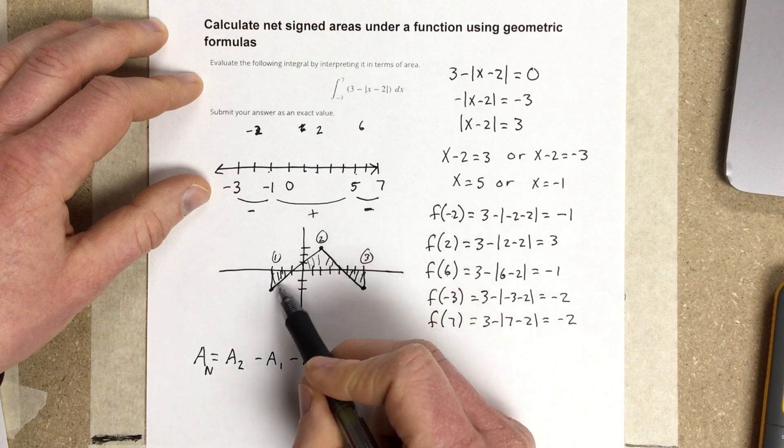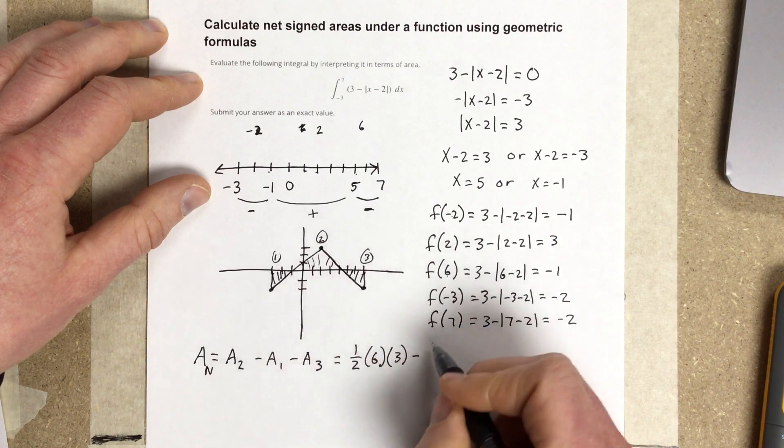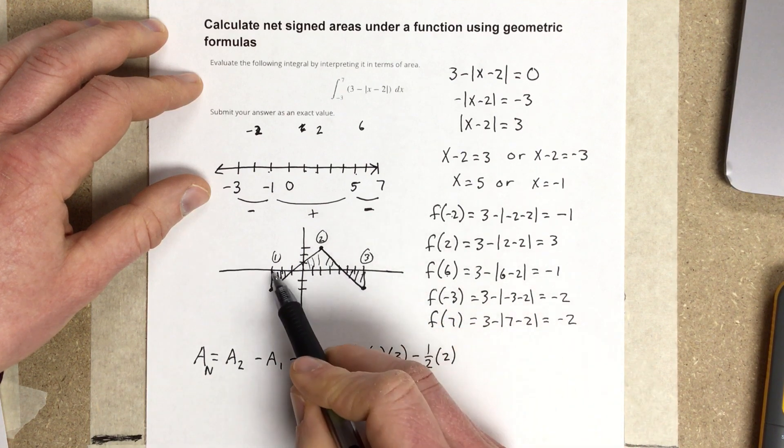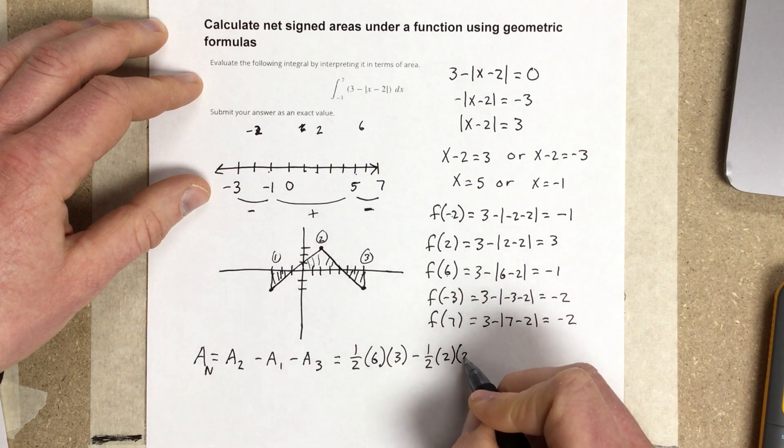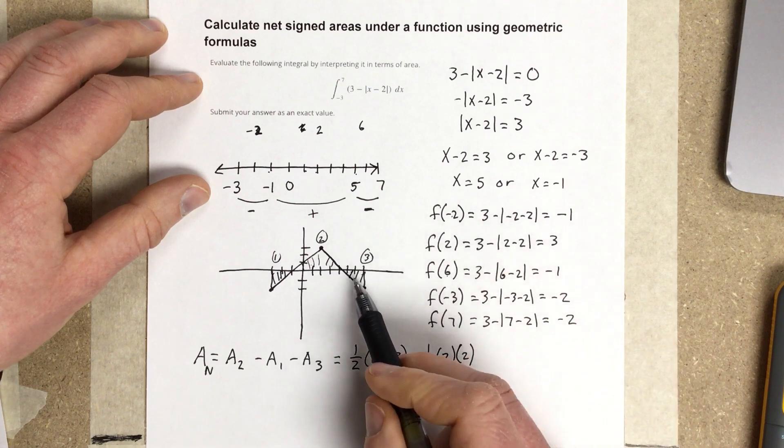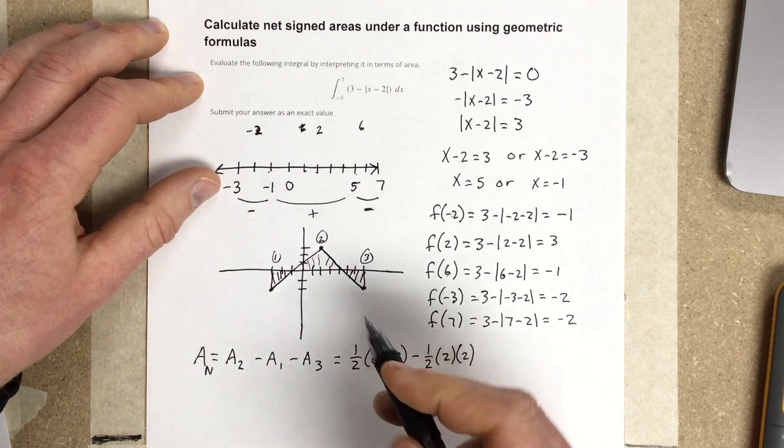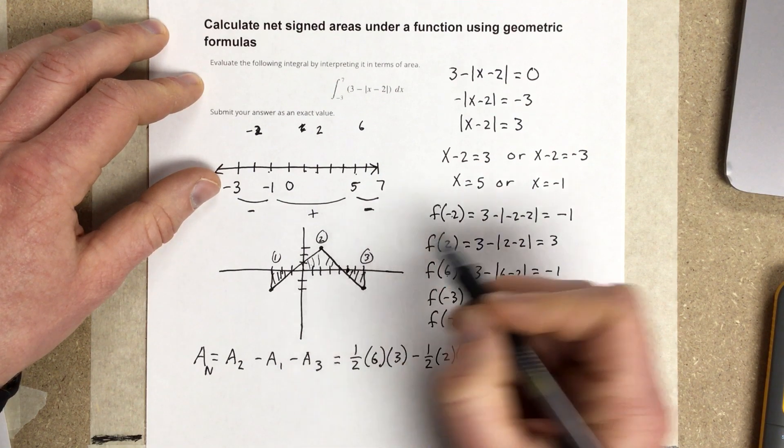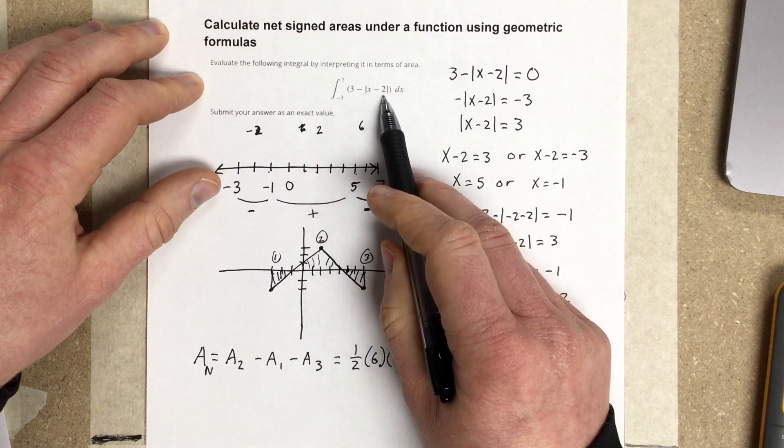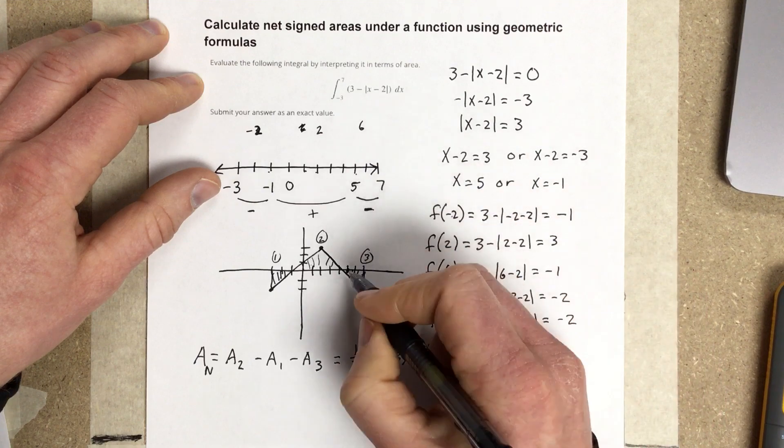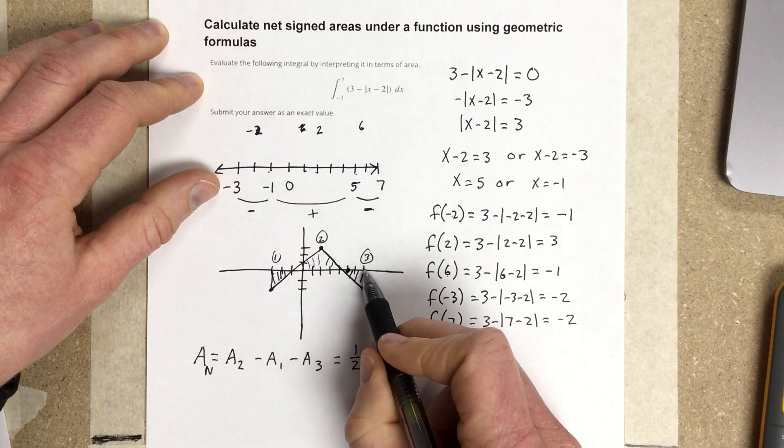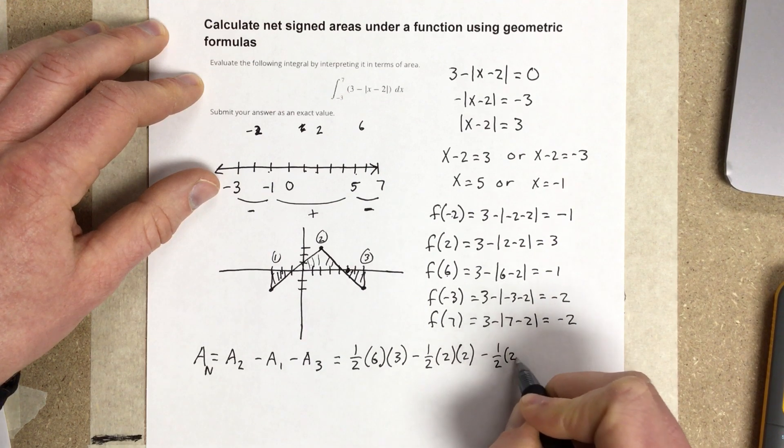And then I'm going to subtract out, the base for this piece is 2. So, 1 half, times the base, which is 2. And, the height is also 2. And then do the same thing here for the last triangle. If you plug 5 in here, you get 5 minus 2, which is 3, and 3 minus 3 is 0. So, I should be zeroing out right there. That would make my base 2 and my height 2. So, I get minus 1 half, 2 times 2.